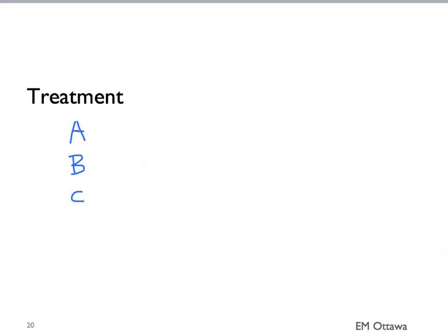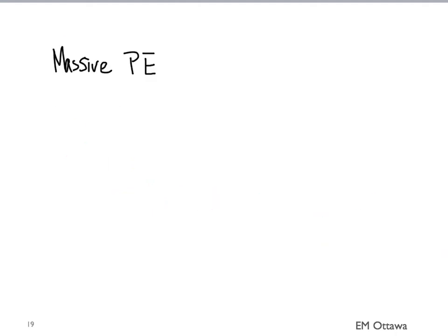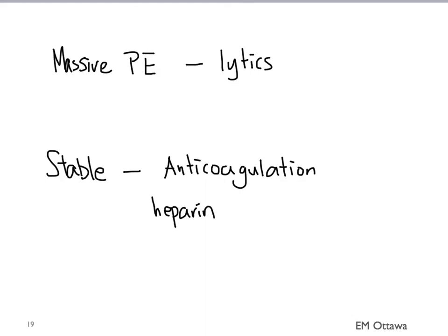We'll talk a little bit about treatment. The treatment of the patient with a PE starts with ABC. We want to ensure that their airway is patent, their ventilation and oxygenation is adequate, and we want to make sure they're not hypotensive. We use IV fluids and vasopressors if needed. In a patient with a massive PE causing cardiovascular compromise, we will consider giving thrombolytics. In those who are hemodynamically stable, we will give anticoagulants. They can include heparin, low molecular weight heparin, and then bridging into warfarin or any other oral anticoagulants.